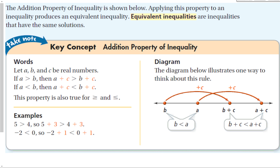The addition property of inequality is shown below. Applying this property to an inequality produces an equivalent inequality. Equivalent inequalities are inequalities that have the same solutions. When we look at the addition property of inequality, a, b, and c are real numbers. If a is greater than b, then a plus c is greater than b plus c — basically, I added c to both sides and keep the expression the same. The same is true for less than, greater than or equal to, and less than or equal to.